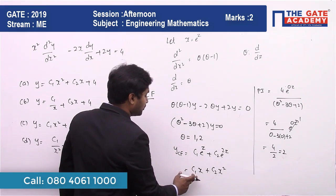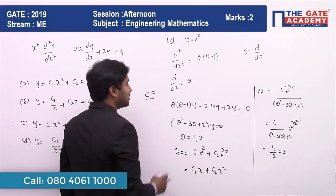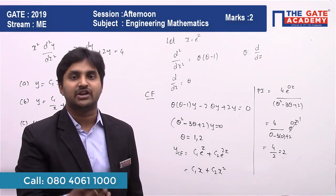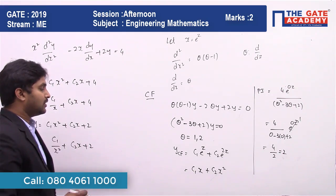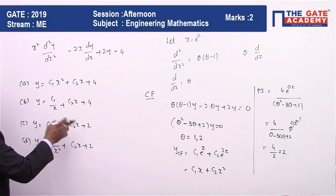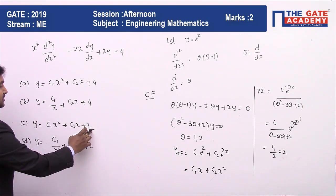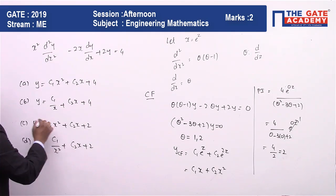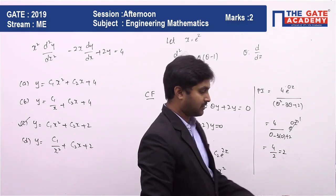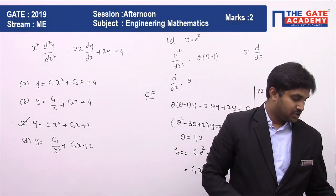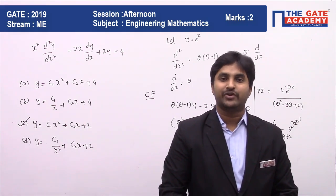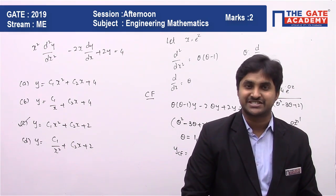The complementary function is c1·x plus c2·x². The general solution is the addition of the complementary function and the particular integral, giving c1·x plus c2·x² plus 2, or equivalently c1·x² plus c2·x plus 2. So the answer for this question is option C. I hope this video is useful for you. Please don't forget to like and share with your friends. Thank you.